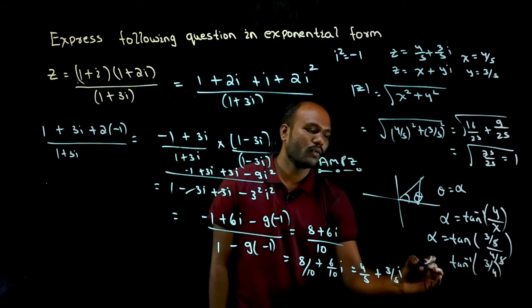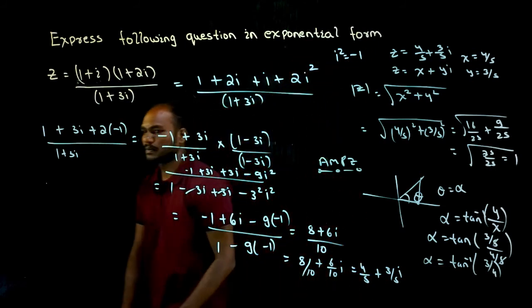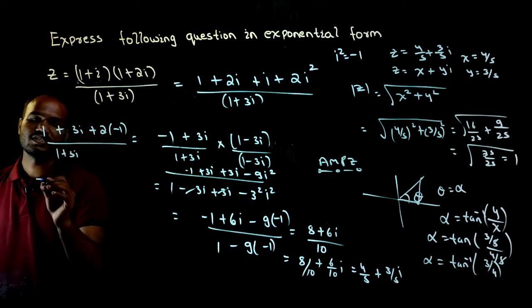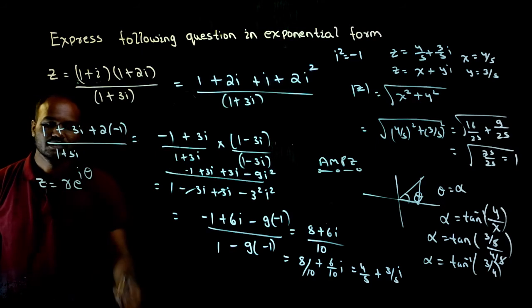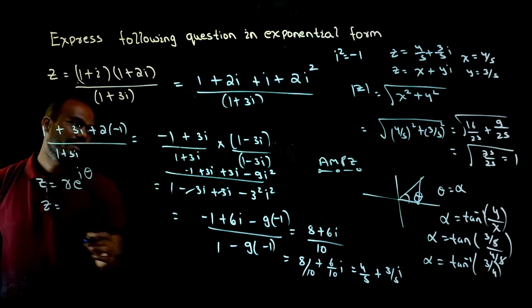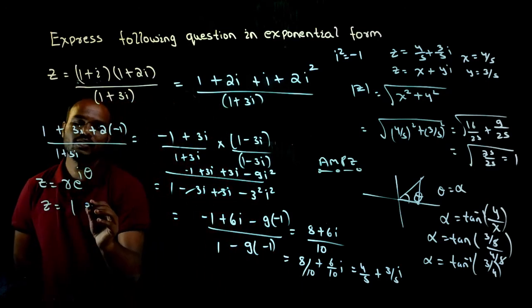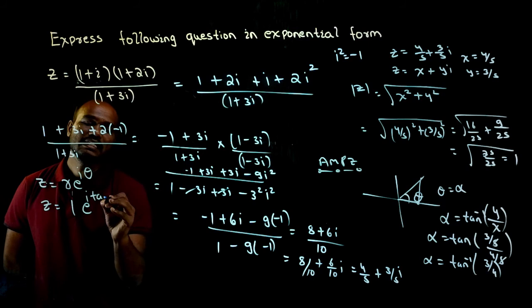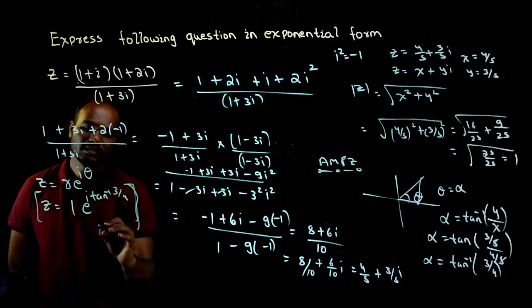So if you want to express this in exponential form, what is exponential form? Exponential form is z is equal to r into e power i theta. So that is equal to—what is r? r is the modulus. How much did I get? 1. So 1 into e power i times—what is theta? Theta is tan inverse 3 by 4. That's it, is the final solution.